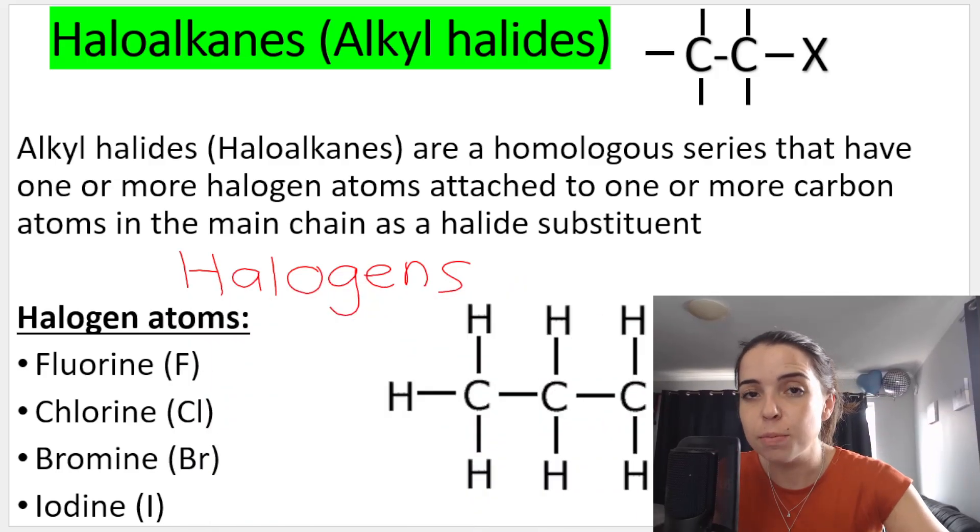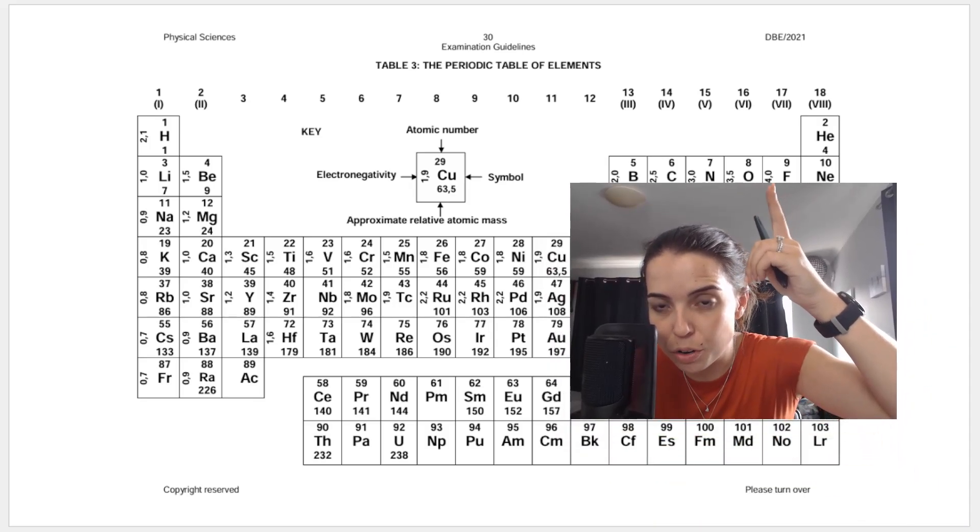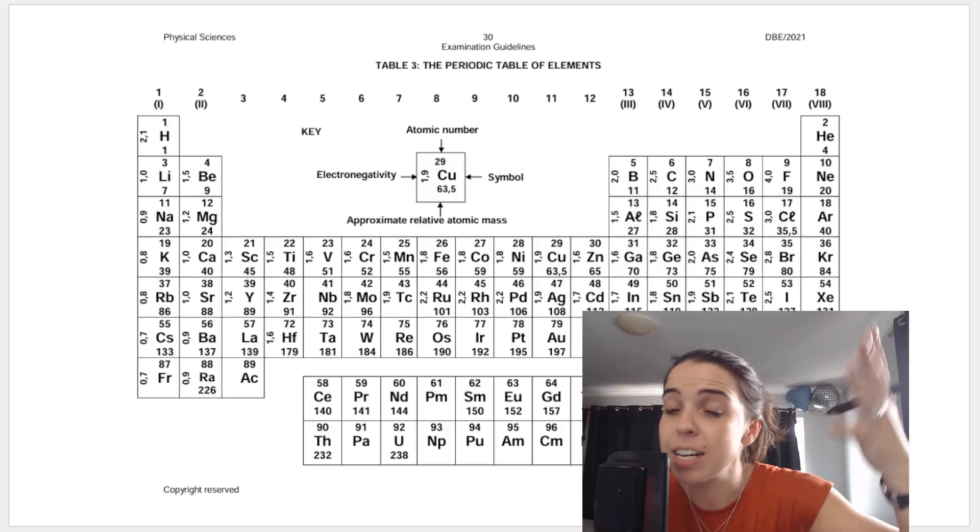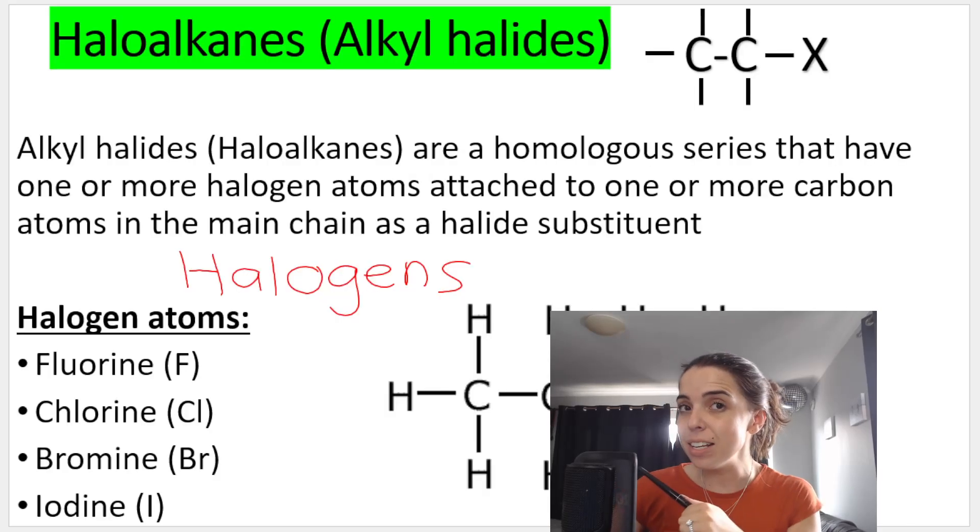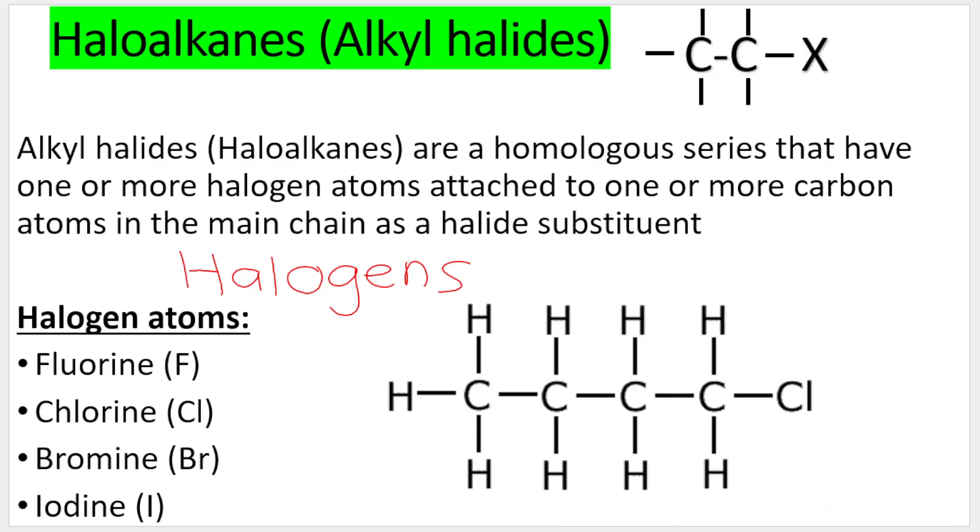Remember, halogens are group 17 on the periodic table, so this group over here. You can see fluorine, chlorine, bromine, iodine, and so on. These are the list of potential halogen atoms that will be attached to one or more of the carbons in the main carbon chain.